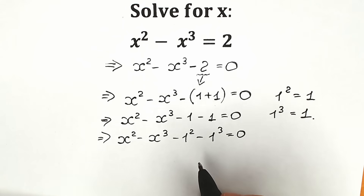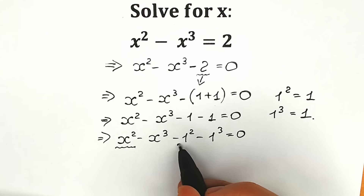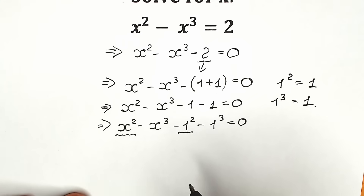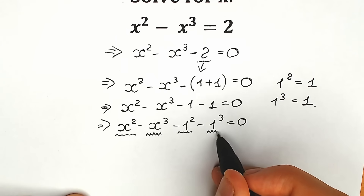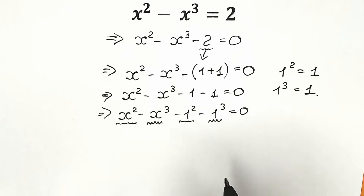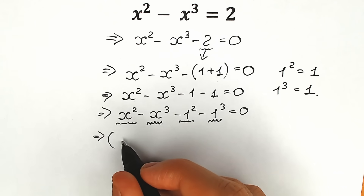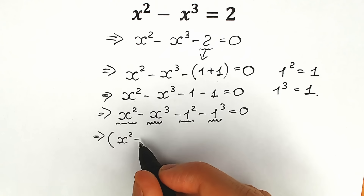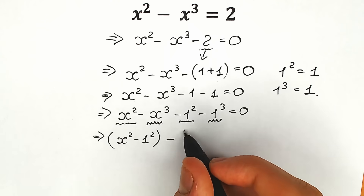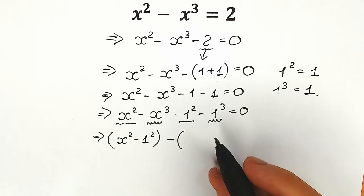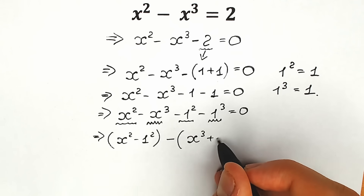Right now, a very tricky moment: we're going to group our squares together and our cubes together. We have x squared and 1 squared — we group those two squares. Then we group the two cubes: x cubed and 1 cubed. In our first parenthesis we will have x squared minus 1 squared. In the second parenthesis we will have minus, and inside: x cubed plus 1 cubed, because the minus sign changes the sign.